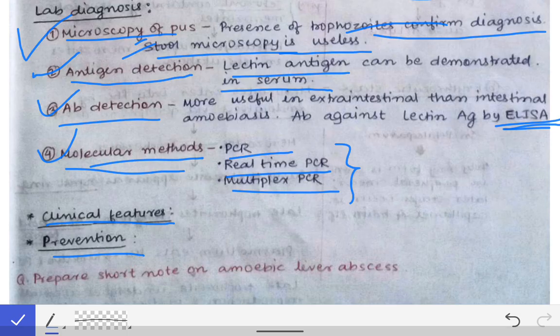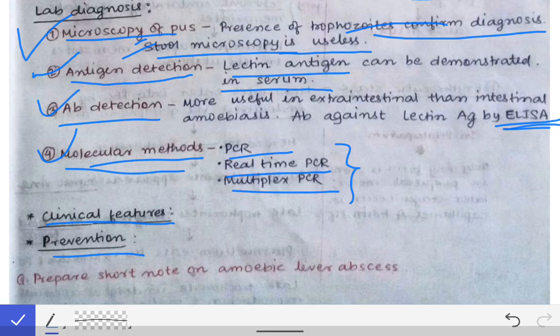Prevention of amoebiasis involves taking sanitary measures and ensuring provision of safe water and food supply. The basic cause is the quadrinucleated cyst — the infective form — entering the body. By preventing its entry through sanitary measures, providing safe water and food, and using sanitary latrines, we can significantly reduce cases of amoebiasis.